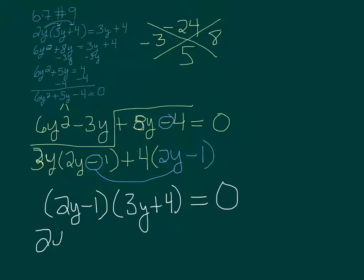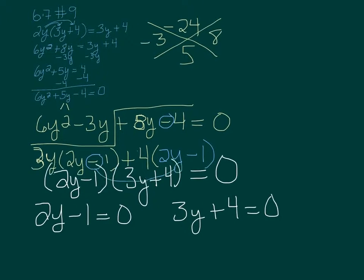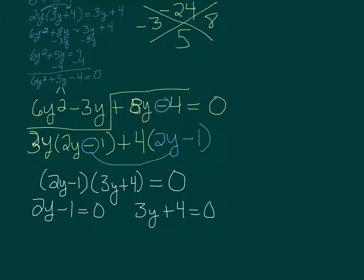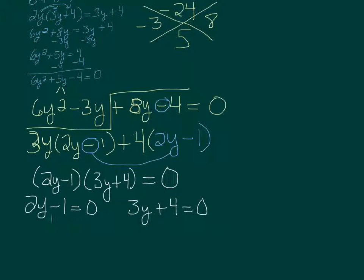So take each one. 2y minus 1 equals 0 and 3y plus 4 equals 0, and you solve them. I'm going to add 1 to each side on this one. I get 2y equals 1. Then divide by 2 on both sides. So y equals 1 half. That's one answer.